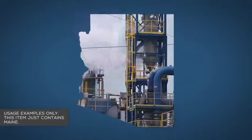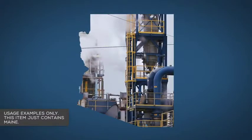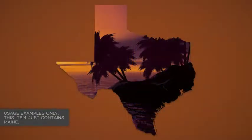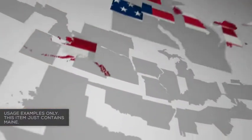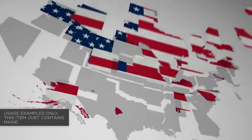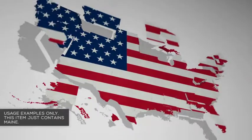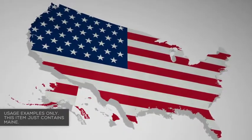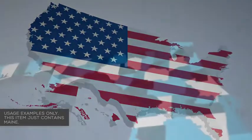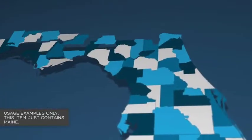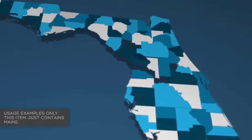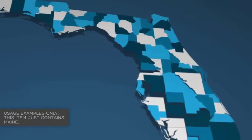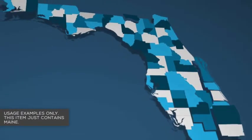Use your own content as a texture for the state — images, footage, whatever you need. Highlight counties with different colors to match your branding and to represent whatever you need the map to represent. Or get creative and add your own animations and images into the texture layers.